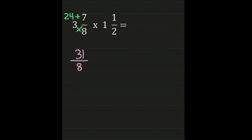We do the same steps with 1 and a half. We multiply our denominator times our whole number and then add our numerator: 2 times 1 is 2, and 2 plus 1 is 3. So 3 becomes our new numerator and our denominator of 2 remains the same, giving us 3 halves.